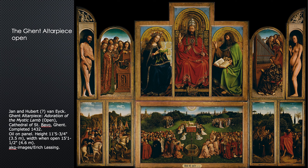On these two side panels we've got Adam and Eve, who according to the Hebrew scriptures were the first humans created by God. I always find it amusing when they have belly buttons, because they were not born in the usual way. Up in these little quarter circles above their heads, we have these grisaille — fake sculpture representations — of the murder of Abel. Cain, their son, murdered their other son, Abel. So that's the fall: Adam and Eve disobeyed God, and they're shown here being ashamed, expelled from the garden.